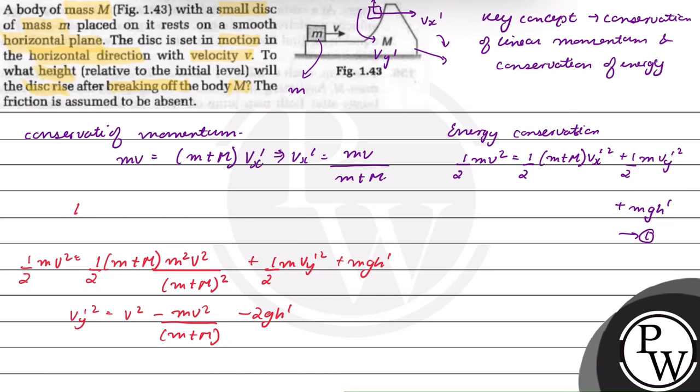Let h double dash be the height of the disk from the breakpoint. So (vy-dash)² will be equal to 2gh double dash.